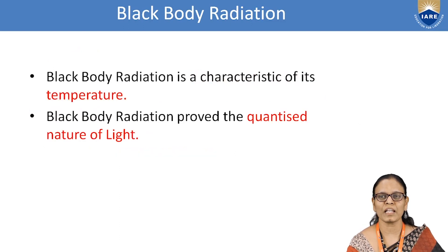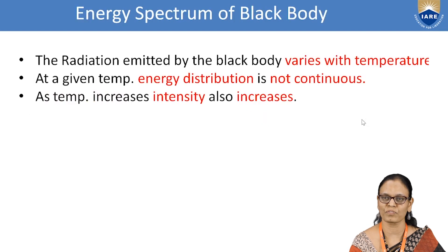Black body radiation is a characteristic of temperature means the radiation varies with temperature and this radiation also proved the quantized nature of light.